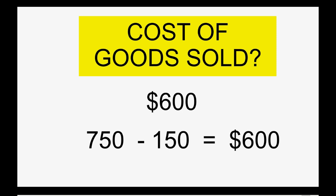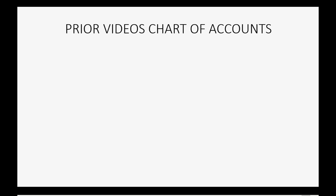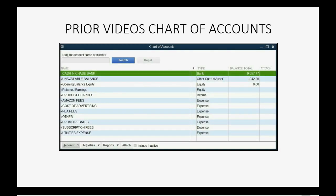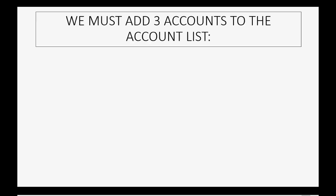So how do we do this in QuickBooks? If you look at the prior video, these were your accounts in the chart of accounts. It was that account 'product charges' that represents the sales — the money that came in from the customers. Now we must add three additional accounts to the chart of accounts in order to have QuickBooks find your cost of goods sold.